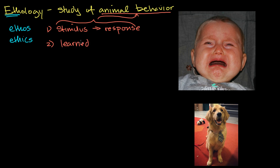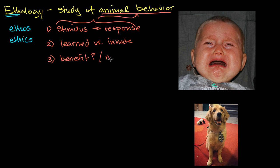A learned behavior is one that an animal saw something else do and adopted — or they were trained to do it, perhaps getting rewarded whenever they performed that behavior. The other option is it's innate: the animal would have done it even if there was no training, even if they never observed it — it's in their genetics somehow. The third question we're going to ask is, what's the benefit here, especially in the context of natural selection? It should have evolved because members of a species that have that behavior are selected for.